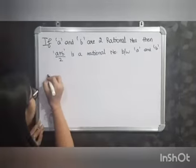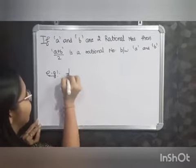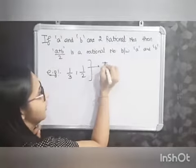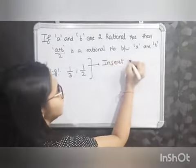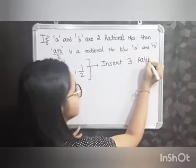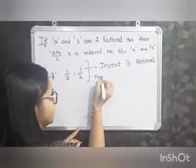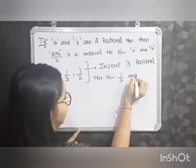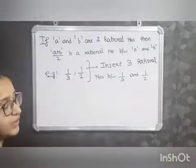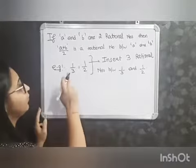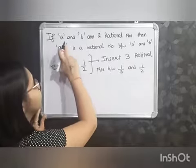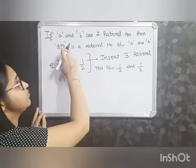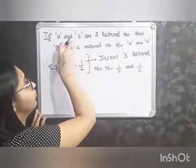For example, if I have rational numbers 1 by 3 and 1 by 2, and the question is: insert three rational numbers between 1 by 3 and 1 by 2. So how will you proceed? Apply this formula. If A and B are two rational numbers, then the new rational number is A plus B by 2, which is a rational number between A and B.